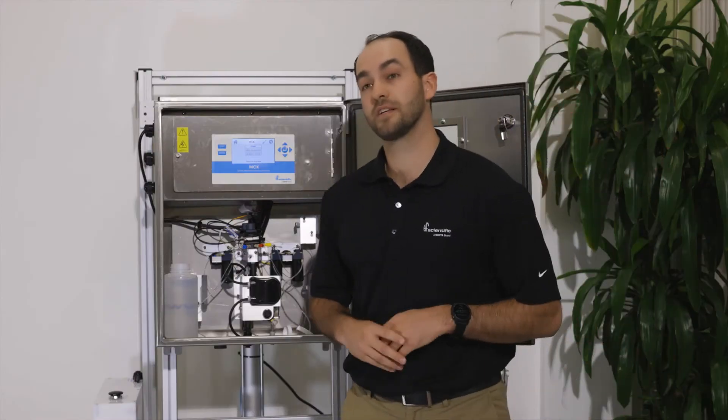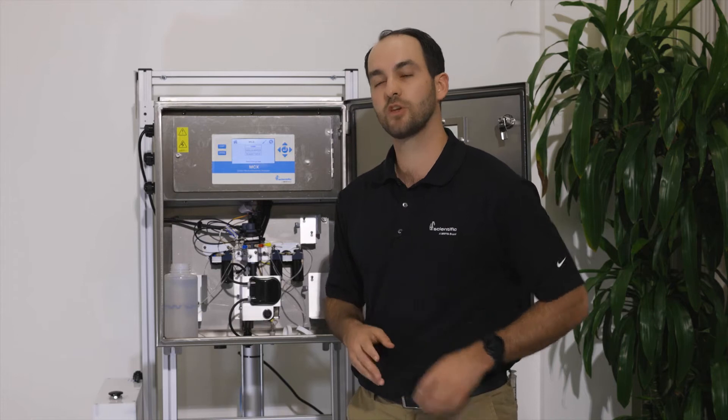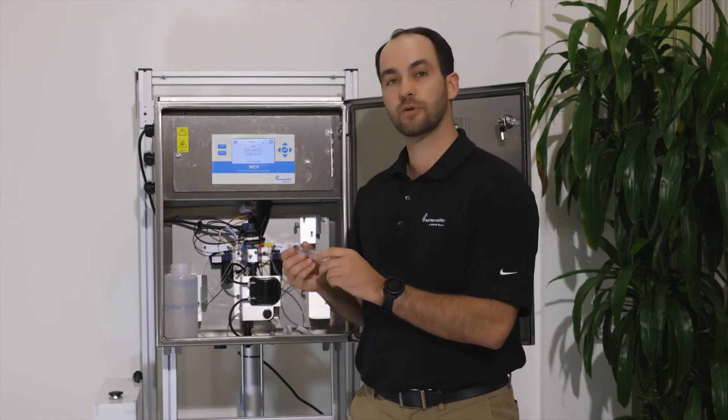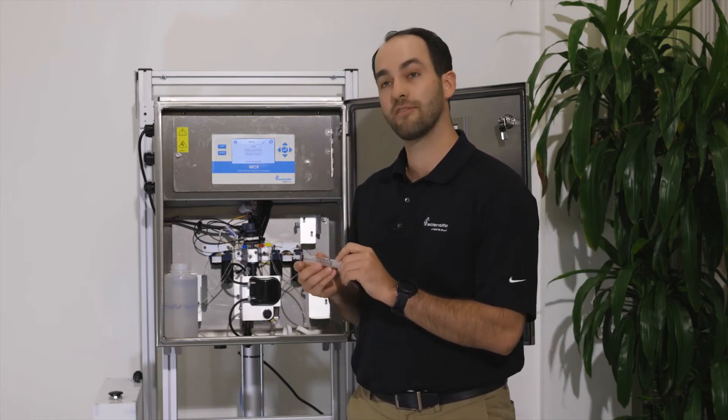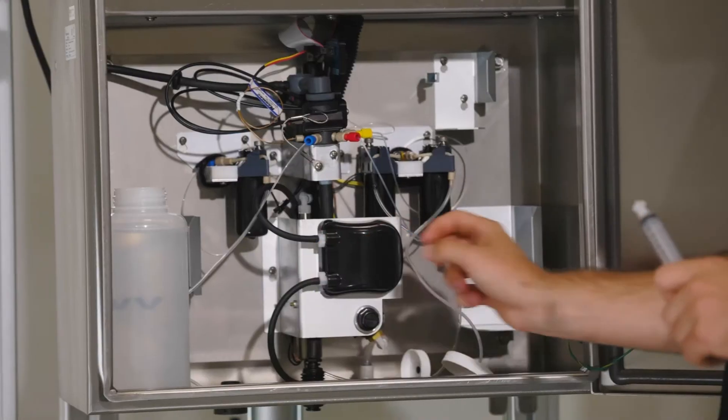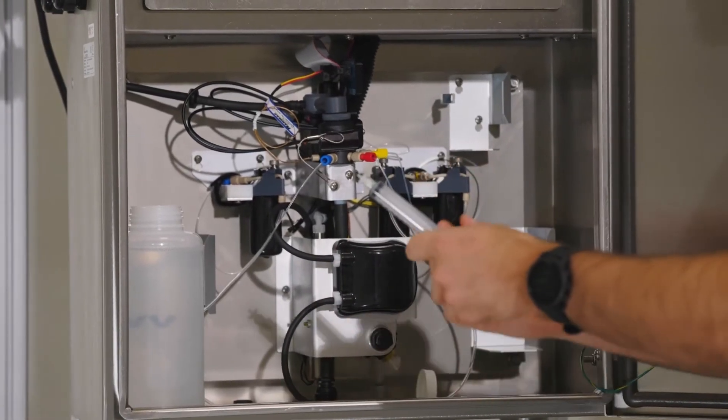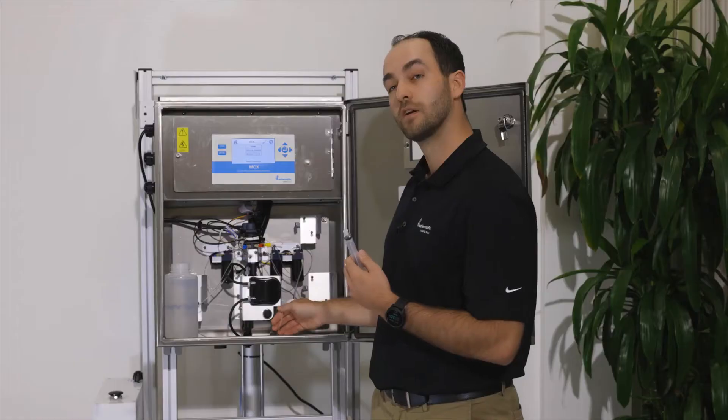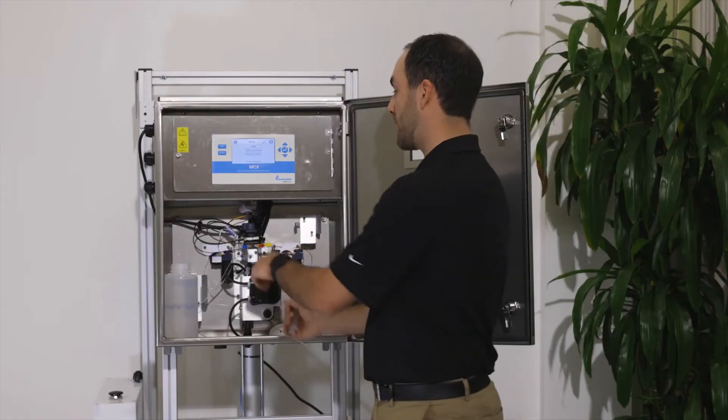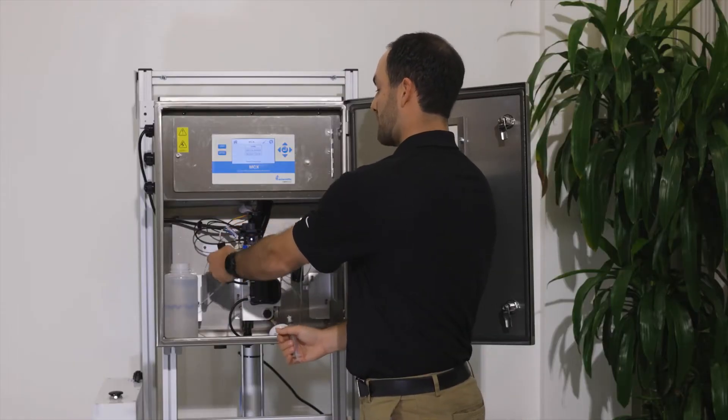The next part is very important. This is flushing the lines. You will take the syringe that was provided with your analyzer and fill the syringe with DI water. You will push the DI water through the bottom of the tube and into the optical block. For this procedure, you want to remove the light shield so you can see inside of the optical block.